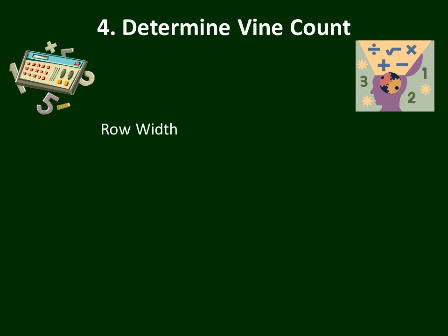Number four: determining your vine count is part of vineyard design because at the time you're designing the vineyard, you should start thinking about ordering vines. Don't think you're going to get the best vines a week or two before it's time to plant. You really need to put your order in to get quality vines as much as a year in advance. So we're going to go through calculations on deciding what factors influence your vine count. The first one is row width — you've got to decide the width of your rows as part of your vineyard design.